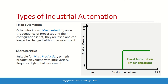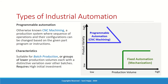Fixed automation involves very high initial investment, but because of the high production volume you should be able to recoup those costs. On the other extreme is programmable automation — we know it as CNC machining. In this type you have the flexibility to simply change the product by reprogramming the system: stop the operation, insert the new program or modify it, and run again.